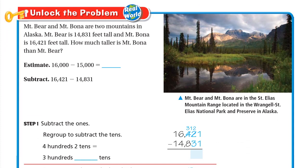Let's unlock the problem. Mountain Pier and Mountain Bona are two mountains in Alaska. Mountain Pier is 14,831 feet tall and Mountain Bona is 16,421 feet tall. How much taller is Mountain Bona than Mountain Pier? Here we need to know the difference between the two mountains.